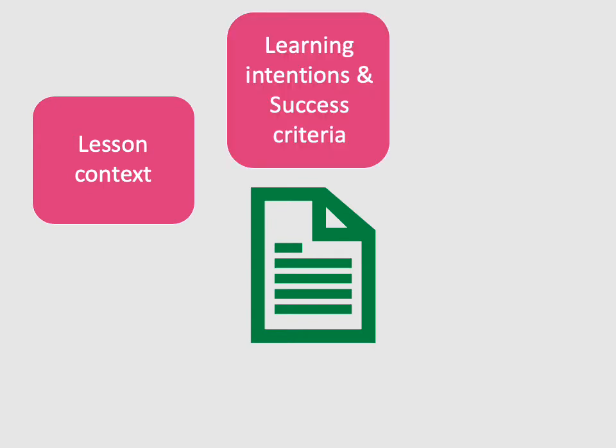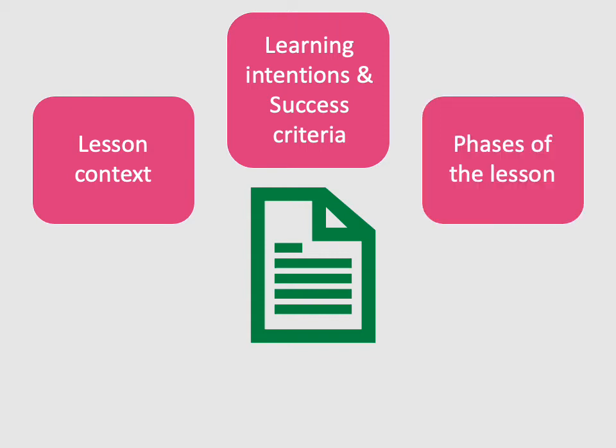The next element is learning intentions and success criteria — the purpose of the lesson, what you want pupils to learn, and how you're going to check that they've learned it. For example, the lesson plan in the chapter has a year nine lesson towards the start of a unit of learning where one learning intention is to understand the principles of pattern cutting, assessed through a success criteria statement requiring pupils to measure, record, and use specific measurements from a model to adapt instructions for drawing out a waistcoat shape.